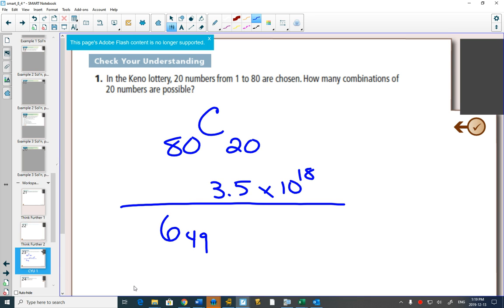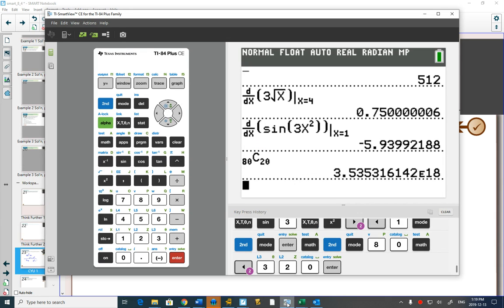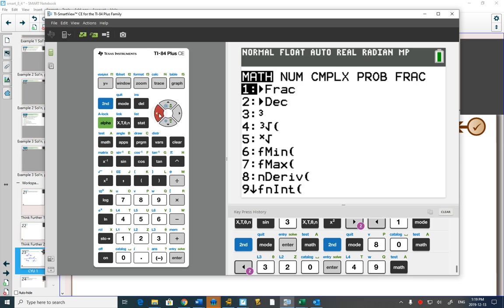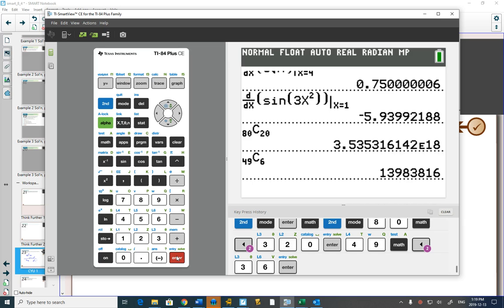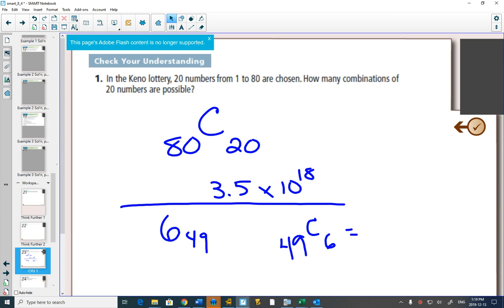That's probably more common. Lotto 649 is the same idea. You have 49 numbers and you choose 6 of them. So 49 choose 6 tells us all the possible different ways that you could choose 6 numbers. And if we type this into our calculator, 49 math choose 6.